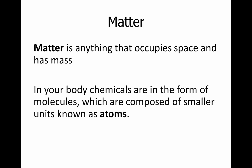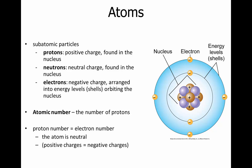In your body, chemicals are in the form of molecules, which are composed of smaller units known as atoms. Found in an atom are three subatomic particles. Protons carry a positive charge and are found housed in the nucleus of the atom. Neutrons, also found in the nucleus, carry no charge and are therefore neutral.